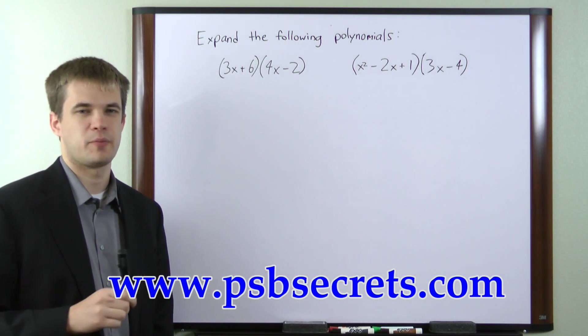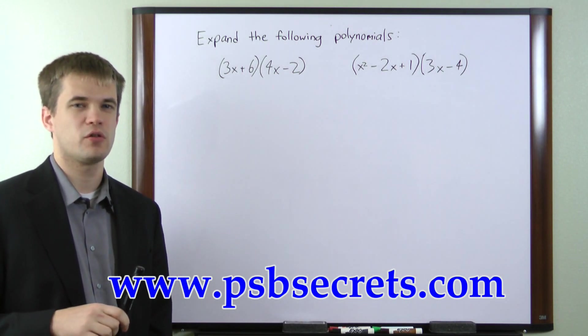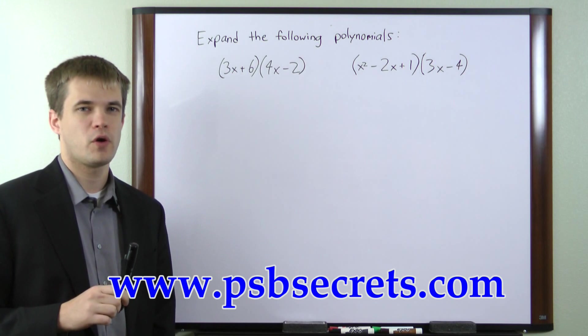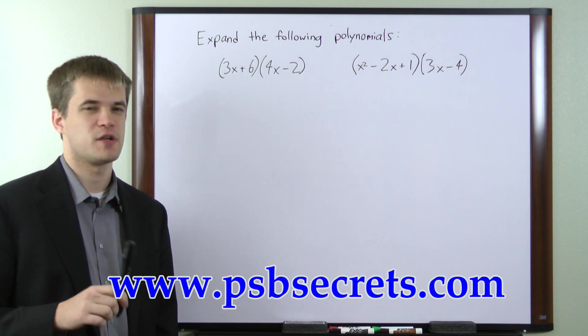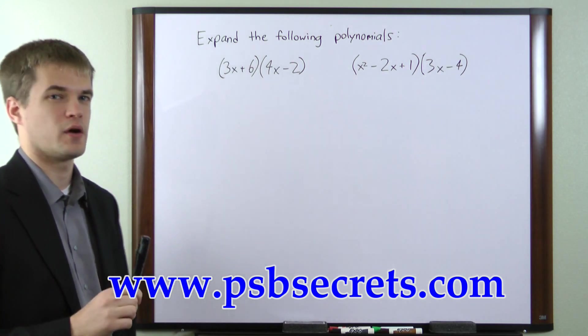The most common method for multiplying a pair of two-term expressions is called the FOIL method. FOIL stands for first, outside, inside, and last. It describes the order in which you multiply each pair of terms.